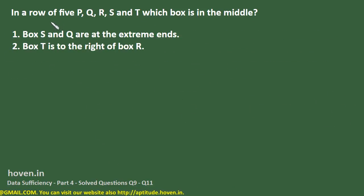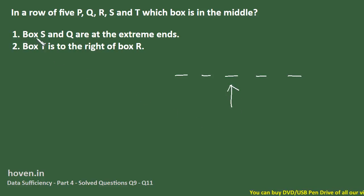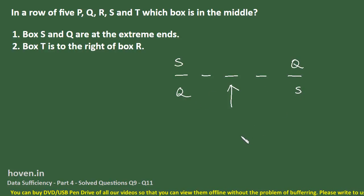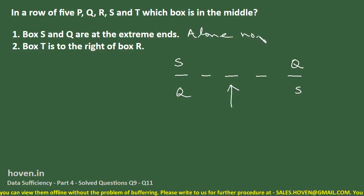Next question: In a row of 5 boxes — P, Q, R, S, and T — which box is in the middle? The first statement says boxes S and Q are at the extreme ends. This means S could be at one end and Q at the other, or vice versa. This first statement alone does not help us find which box is in the middle, so it is not sufficient.